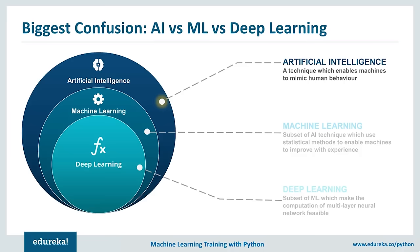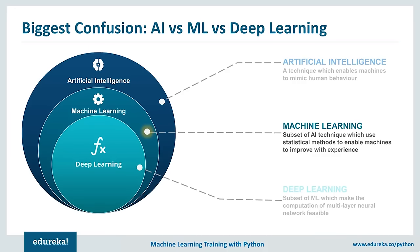Machine learning is a subset or current application of AI. It's based on the idea of giving machines access to data and letting them learn from themselves. It's a subset of AI that deals with the extraction of patterns from datasets, meaning the machine can not only find rules for optimal behavior but also adapt to changes in the world. Many algorithms have been known for decades and can now scale to massive data volumes.